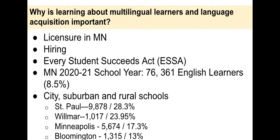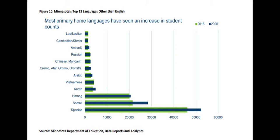These students, while concentrated in the Minneapolis-St. Paul metropolitan area, can be found throughout the state. This slide presents data on the primary home languages spoken by students in K-12 schools. As you can see, the top languages are Spanish, Somali, Hmong, Karen, Vietnamese, and Arabic. You will have an opportunity to learn more about these linguistic and cultural groups later in this course.